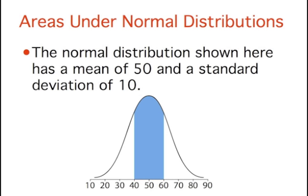This figure shows a normal distribution with a mean of 50 and a standard deviation of 10. The shaded area is the area from one standard deviation below the mean, 50 minus 10 which equals 40, to one standard deviation above the mean, 50 plus 10 equals 60.